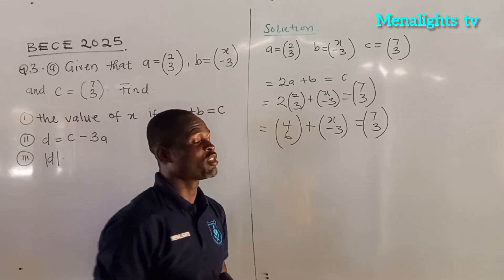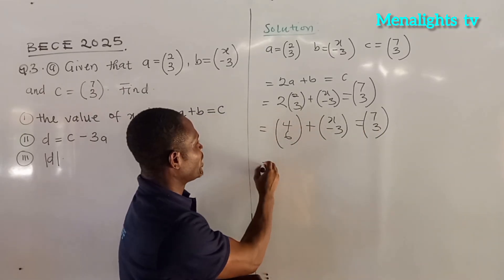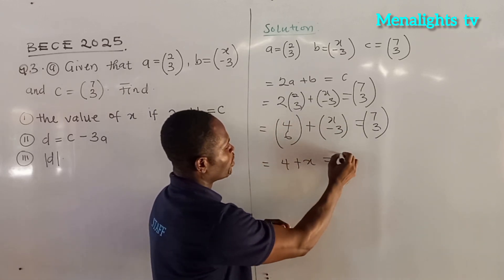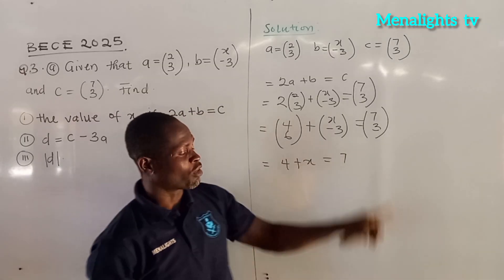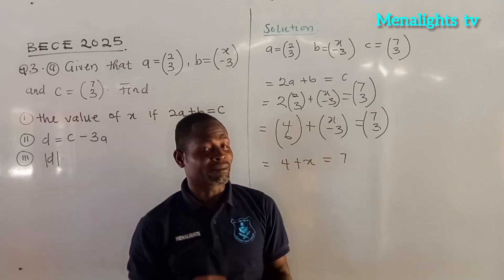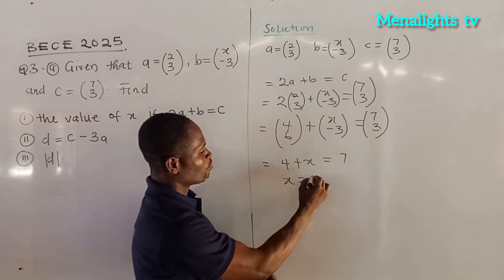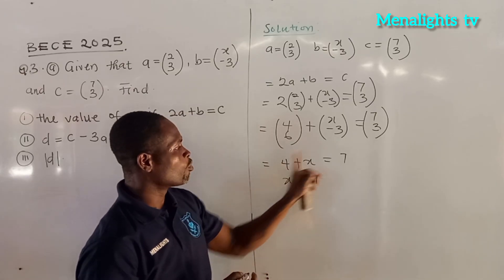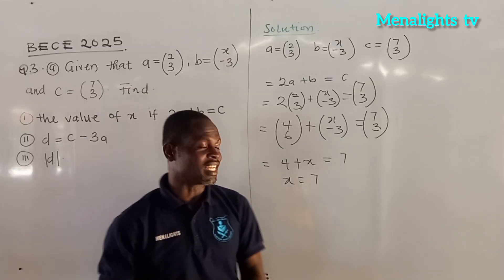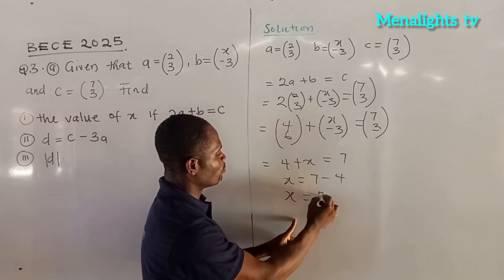Those are the coordinates of the x-axis and those are the coordinates of the y-axis. So we take the top ones: 4 plus x equals 7. Now we find the value of x by making x the subject. Our x equals 7 minus 4 — the 4 is positive, so once it moves over it becomes negative. So our x is equal to 3.